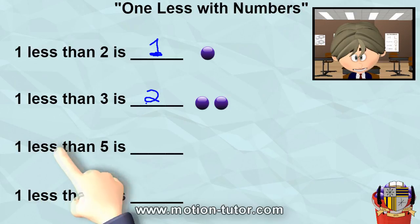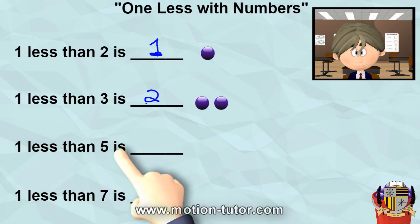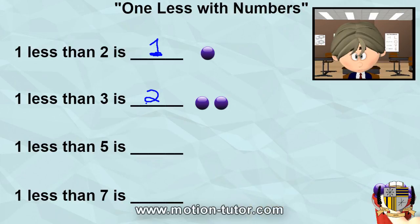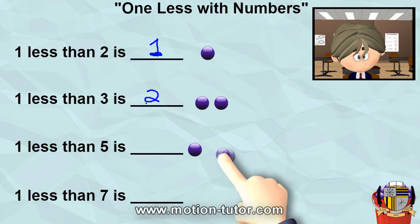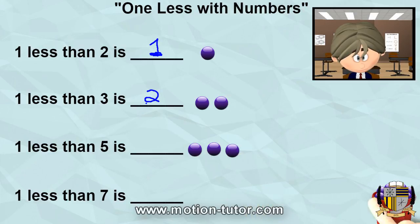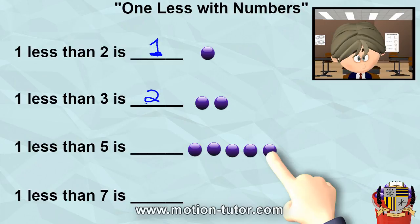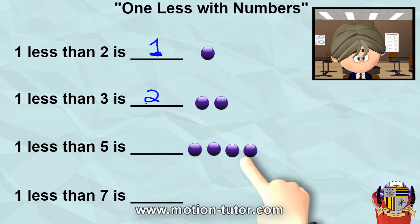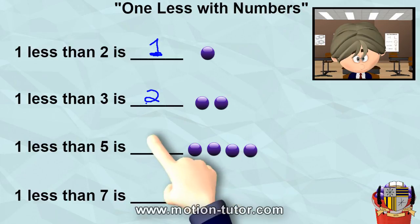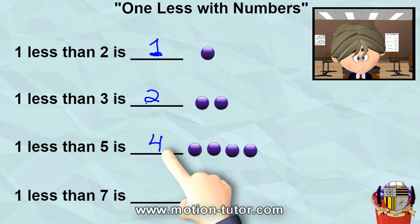One less than five is... let's take a look at five. Here's one, two, three, four, and five. So that's five. And one less will look like this. And what are we left with? We're left with one, two, three, four. So that means one less than five is four.